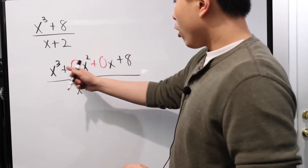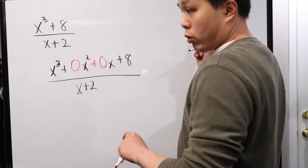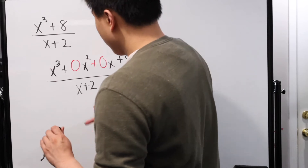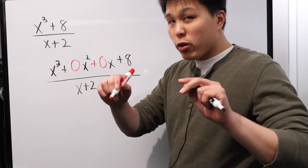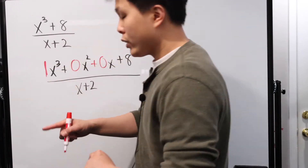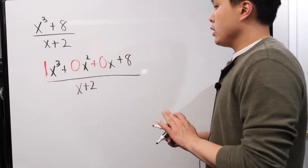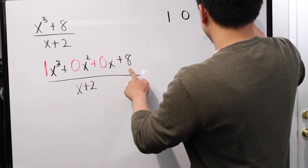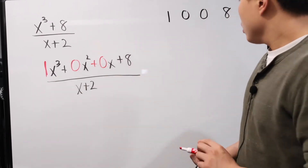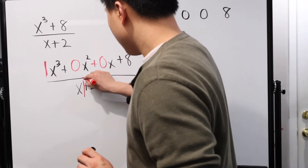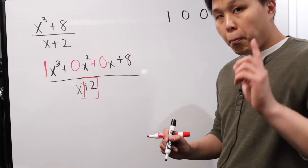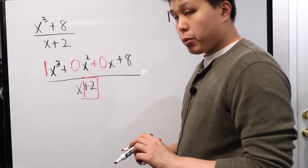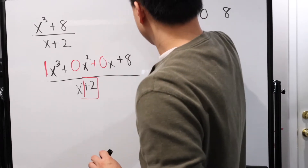So after you set this up, now you can carry out synthetic division. If you don't include those placeholder zeros, the synthetic division won't work and it's going to be super confusing. Now we look at all the coefficients and write them in a row. The coefficient in front of x cubed — there's no visible number, but technically there's always an invisible one. So we write: one, zero, zero, eight. Now remember, we have to look at the bottom number. That's a positive two, but for synthetic division we take the opposite, so we're looking at negative two.